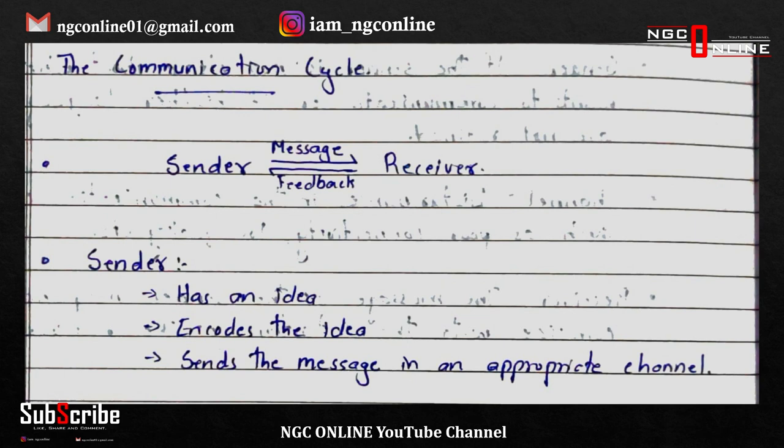The two key points are the sender and the receiver. The sender has an idea. He encodes the idea and sends the message through an appropriate channel.